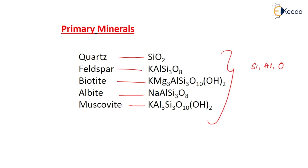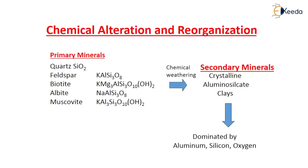Coming to the chemical alteration and reorganization process - how does it take place? By weathering of physical agents, primary minerals are formed: quartz, feldspar, biotite, albite and muscovite. Again, these primary minerals undergo chemical weathering and secondary minerals are formed, which are crystalline aluminosilicates and clays. These are dominated mainly by aluminium, silicon and oxygen. This is a brief slide which we have studied.